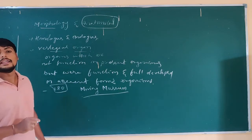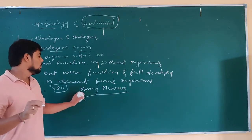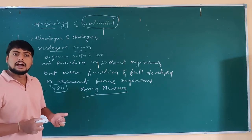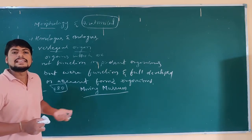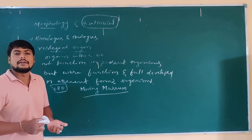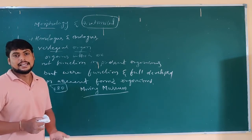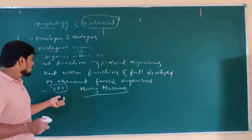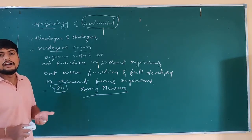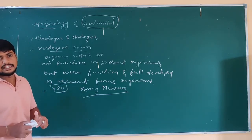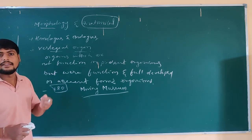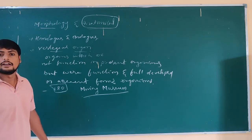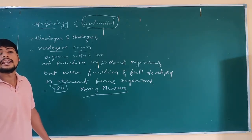Why is the human body called a moving museum? Because our body consists of around 180 vestigial organs along with functioning organs — hence it is called a moving museum. These 180 organs which are not functioning nowadays include, for example, the pinna — that is the external ear — which is also a vestigial organ.